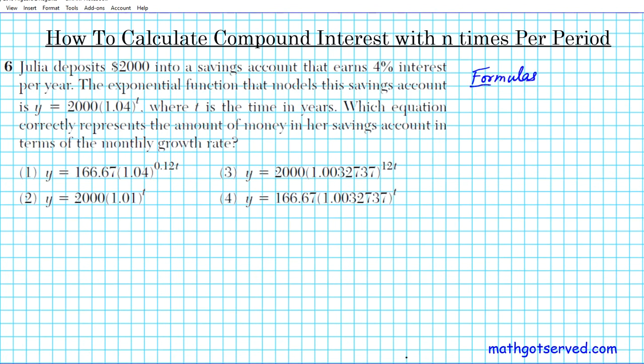This is for exponential growth models. If you have once a year, the formula is going to be y equals a times 1 plus r raised to the t. This is once a year.